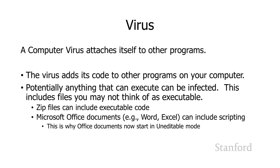A virus is a computer program which attaches itself to other programs. When it runs, it looks for other executable programs on your computer and adds copies of itself to the instructions in those programs. The next time you run one of those programs, the virus code will run. There are different ways a virus figures out which programs to attach itself to — sometimes it's designed to attach to specific programs, sometimes it looks for running programs. The basic idea is the virus replicates itself by attaching itself to different programs. Potentially anything that can be executed can be infected.